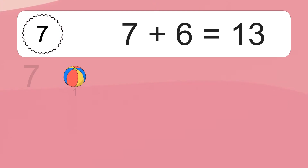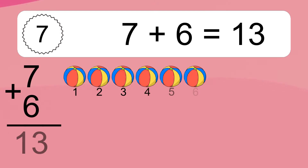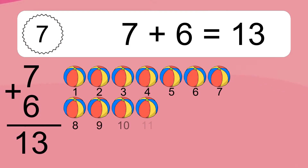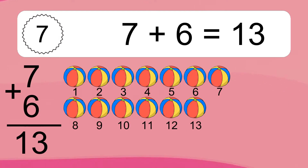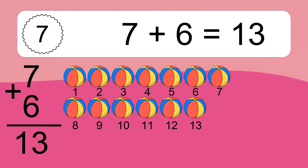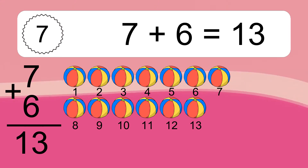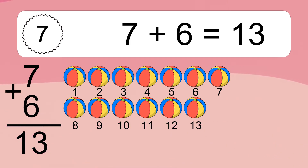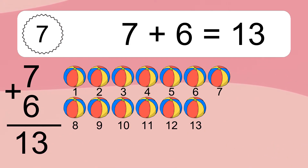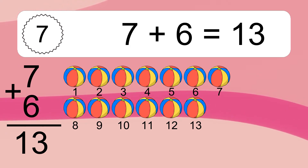7 plus 6 equals 13. Let's count it. 1, 2, 3, 4, 5, 6, 7, 8, 9, 10, 11, 12, 13.